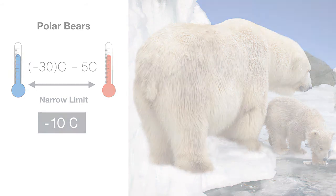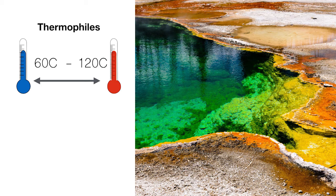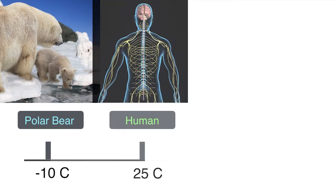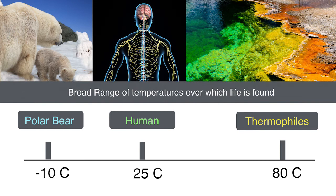Last but not least, let's have a look at organisms that thrive in very hot temperatures. Organisms that prefer places with really high temperatures are called thermophiles. Thermophilic bacteria is a good example of a thermophile, as it can survive at temperatures ranging from 60 to 120 degrees Celsius. This puts thermophiles on the far right end of our very simple graph of narrow limits. Should polar bears, humans, or thermophiles deviate from their range too much, they compromise homeostasis, their enzymes won't function properly, and it'll be painful for everyone — or everything — involved.